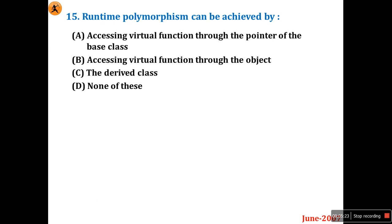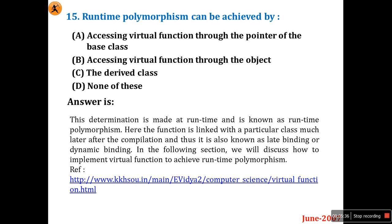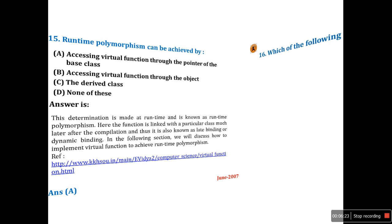Question 15: Runtime polymorphism can be achieved by accessing a virtual function through a pointer of the base class, accessing a virtual function through an object of the derived class, or none of the above. Virtual functions support runtime determination — also called late binding or dynamic binding — where the function is linked with a class after compilation, at runtime. Option A is the right answer.